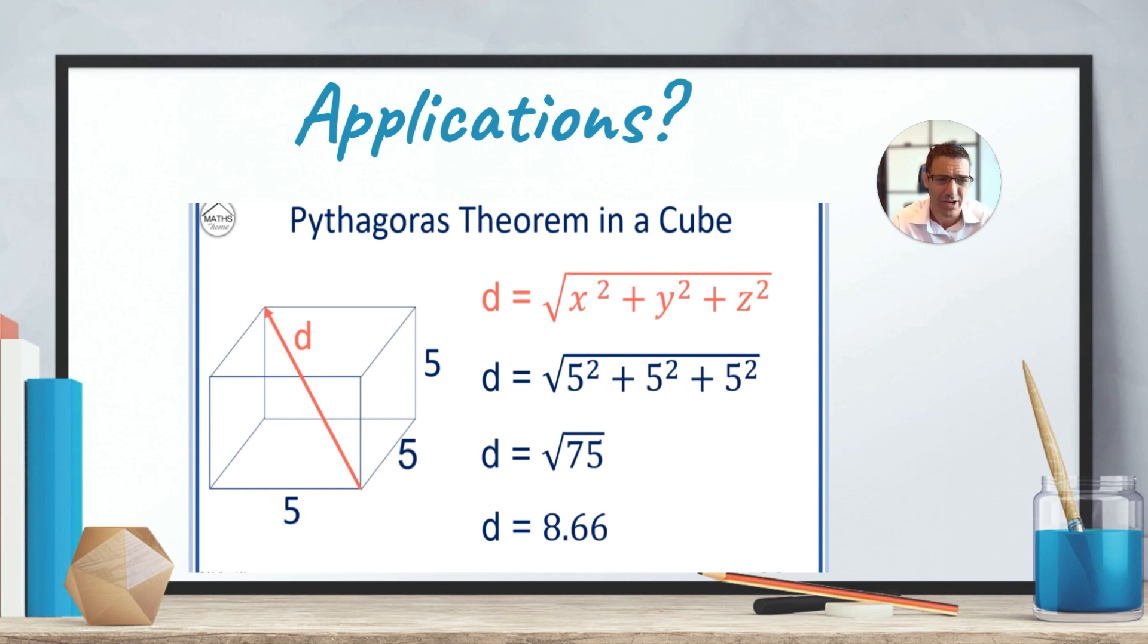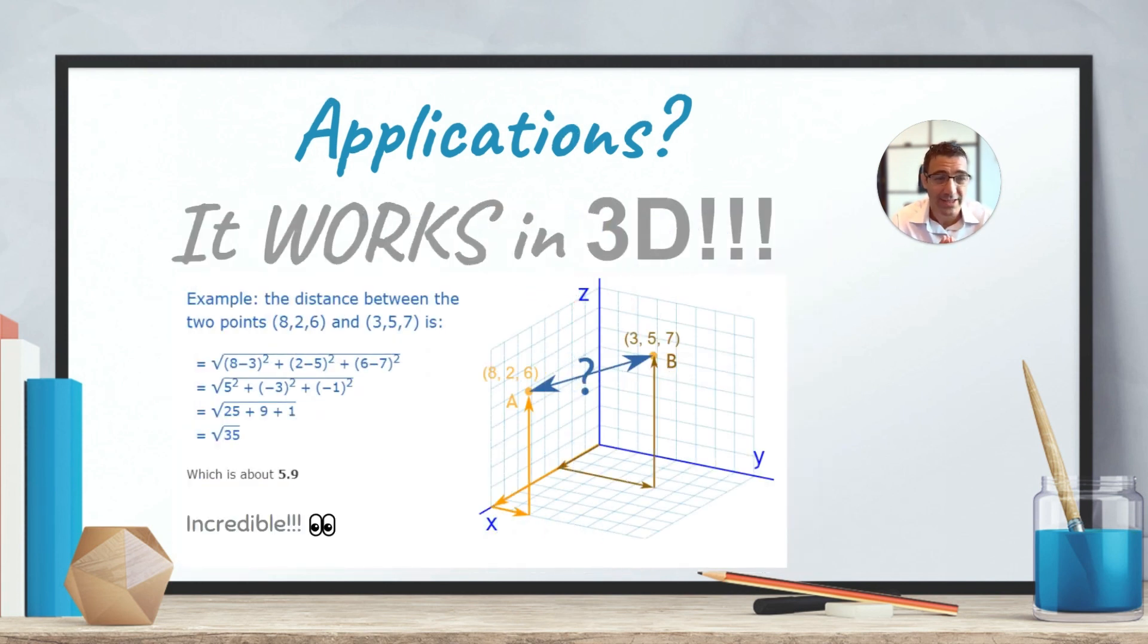Can you believe it? Amazing, right? Not only does it work in three dimensions, but you can still find the distance between two points in three dimensions. And so a very quick example here would be if you have the point 826 and the point 357, you can find the difference between 8 and 3, the difference between 2 and 5, which is the y difference, the difference between 6 and 7.